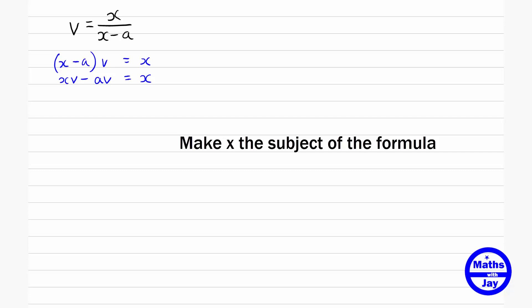So I'm going to subtract x from both sides so that we get xv staying where it is, subtract x from both sides so it disappears from the right-hand side and we get minus x on the left-hand side. And we're going to add av onto both sides so it disappears from the left-hand side and appears on the right-hand side.